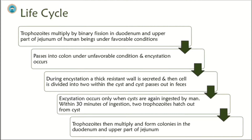Life cycle of Giardia lamblia: Trophozoites multiply by binary fission in the duodenum and upper part of jejunum of human beings, but this occurs in favourable conditions. Under unfavourable conditions, they pass out into the colon and encystment occurs. Encystment means that trophozoites get converted into cyst forms. During encystment, a thick resistant wall is secreted and the cell divides into two within the cyst, and the cyst passes out in feces. This is the diagnostic feature that we identify.